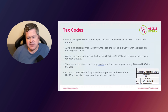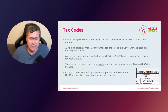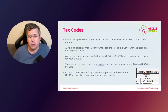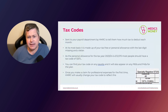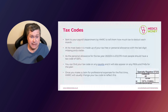If HMRC think you owe them more than your personal allowance of £12,570, they may apply a K tax code — a negative tax code — so-called because the letter K is placed before the number. This results in even bigger income tax bills each month. If you have a K tax code, the maximum they can take back is capped at 50% of the income received — still obviously a huge amount, but that's the cap; they cannot take more than that.